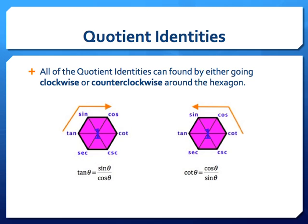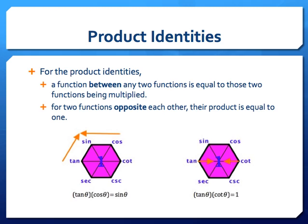For the product identities, I've got two different ways to find them. When we have a function that is between any two functions, it is going to be equal to those two functions being multiplied. So sine is in between tangent and cosine, which tells me that tangent times cosine is going to be equal to sine. And again, I can do this anywhere along the hexagon.